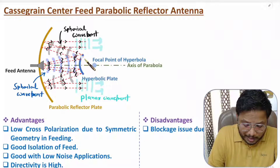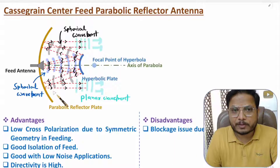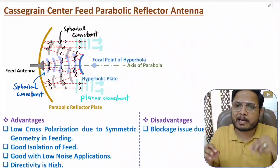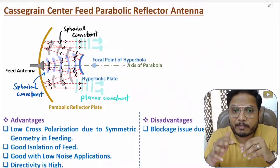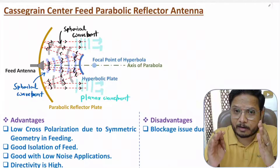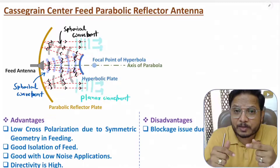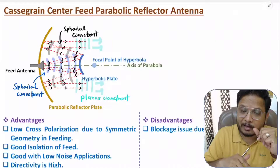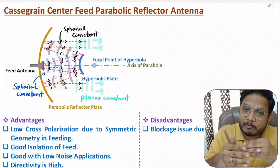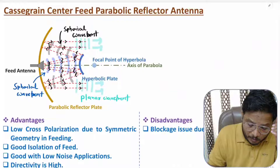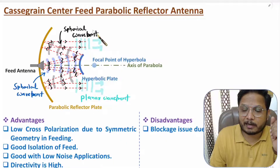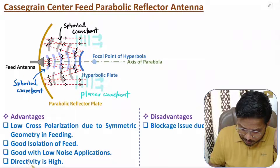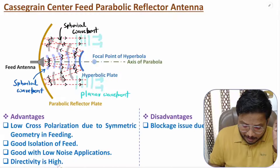The high directivity comes from having two reflections, and this design is typically used with giant structures. Some parabolic reflector antennas have a size of hundreds of meters, and with that size you cannot use a single feed alone — you need a secondary reflector along with the feed before connecting to the primary reflector. So this design is used specifically for giant structures, which will always have high directivity.